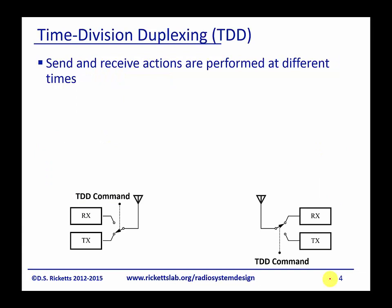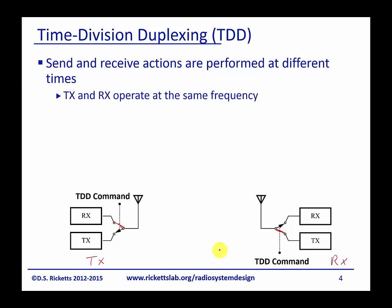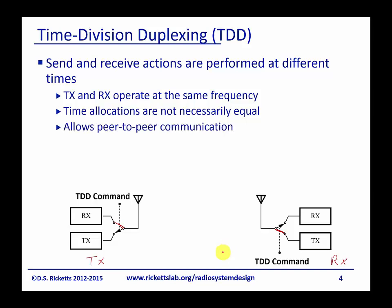In time division duplexing, we send and receive at different times. The transmitter will turn its switch to transmit and the receiver will close the switch to receive, and then when the receiver wants to reply, it closes its switch to transmit and the other closes to receive. A simple way to think about this is a walkie-talkie: you push the button to transmit, let it go to receive, and coordinate implicitly with the other person. Both transmit and receive operate at the same frequency, time allocations are not necessarily equal, and it allows peer-to-peer communication.